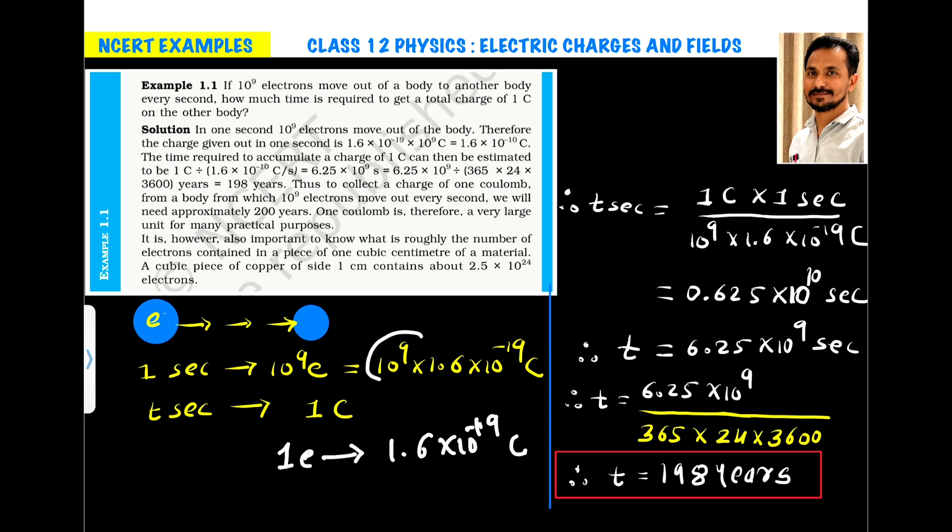So, every second here, 10 raised to 9 electrons are moving. So, in 1 second, 10 raised to 9 into 1.6 into 10 raised to minus 19 coulomb charge is being transferred from 1 body to another body. So, let us assume in 1 second, the total charge transfer is 10 raised to 9 into 1.6 into 10 raised to minus 19.